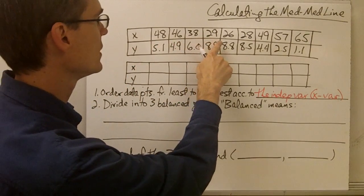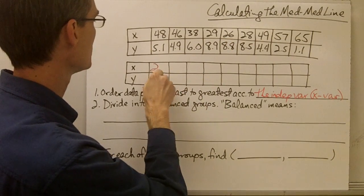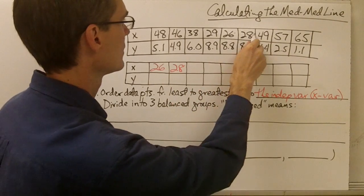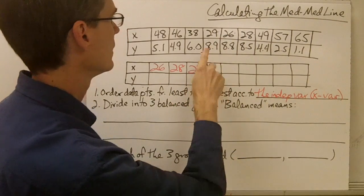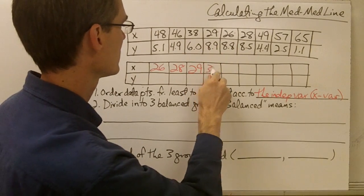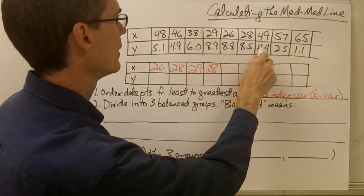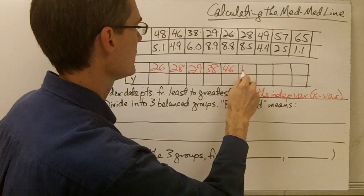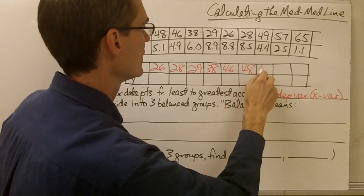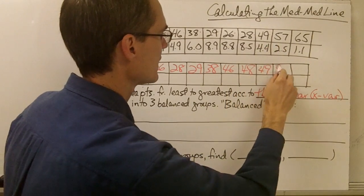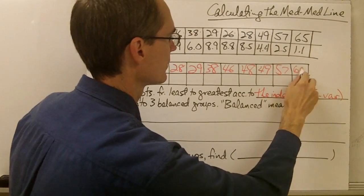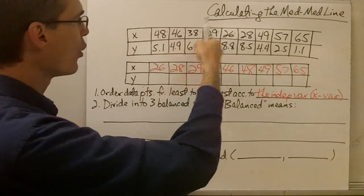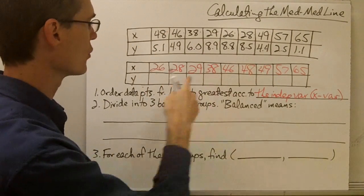My smallest x value is 26, so that's going to be first. My next is 28, then 29, then 38, and 46, then 48. I'm ordering my data points in order by the x coordinates.